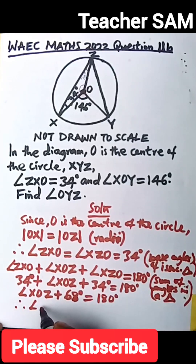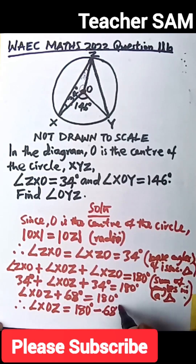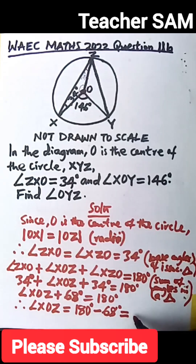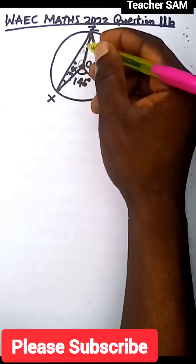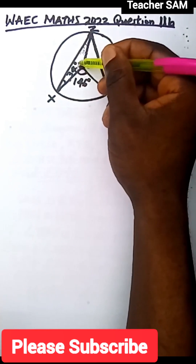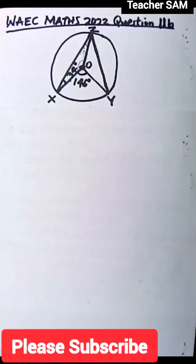Therefore, angle XOZ equals 180 degrees minus 68 degrees. When we solve that, 180 minus 68 gives us 112 degrees. So we have found this angle to be 112 degrees.